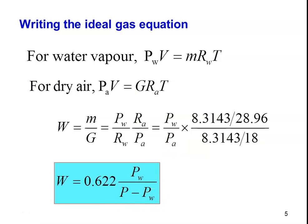From Dalton's law, Pa + Pw = P, so we substitute to get specific humidity equal to 0.622 times Pw divided by P minus Pw. This equation must be remembered. Wherever we calculate specific humidity, we calculate it from the partial pressure of water vapor, knowing the total pressure of the air-water vapor mixture in the room.